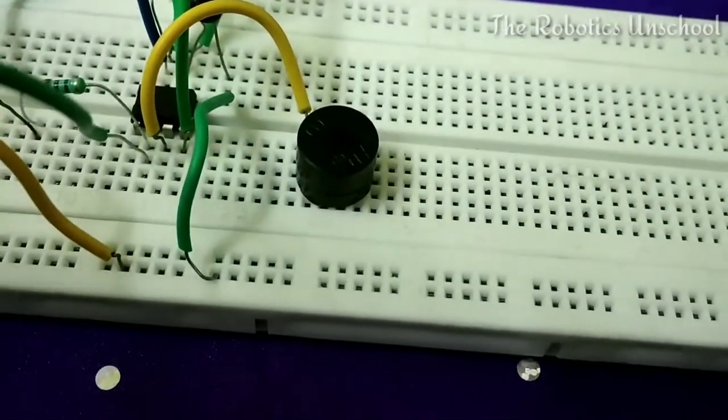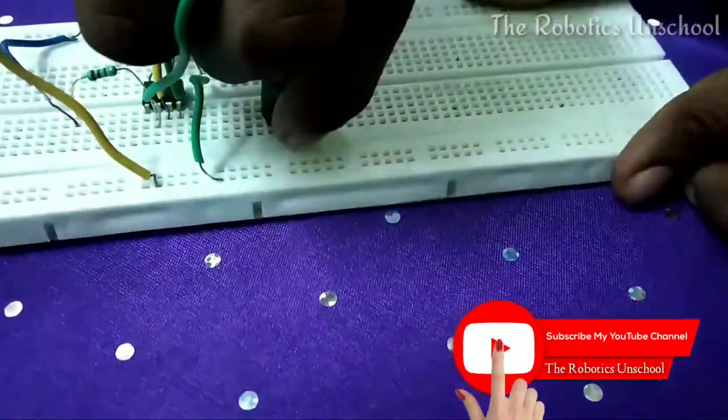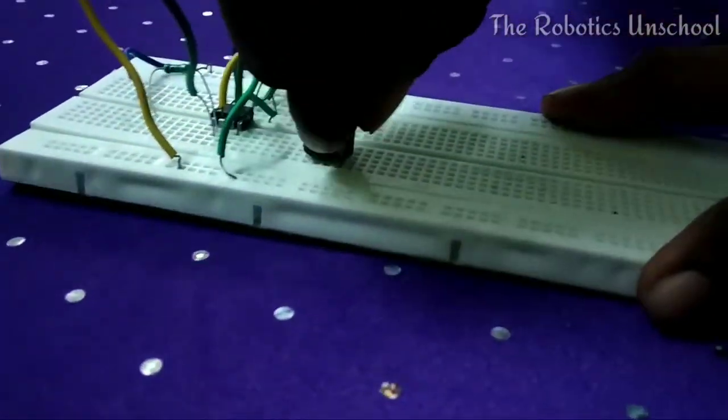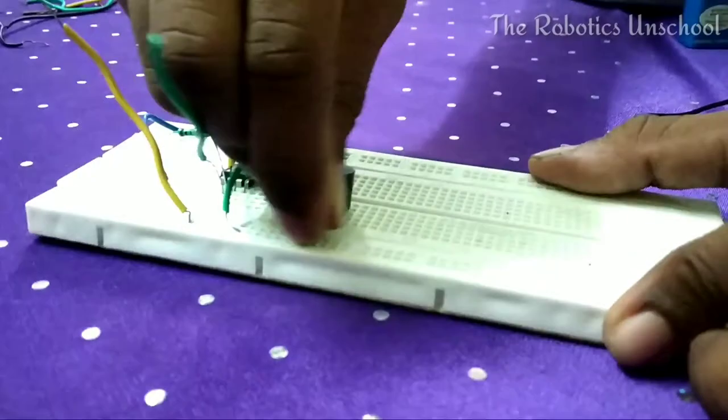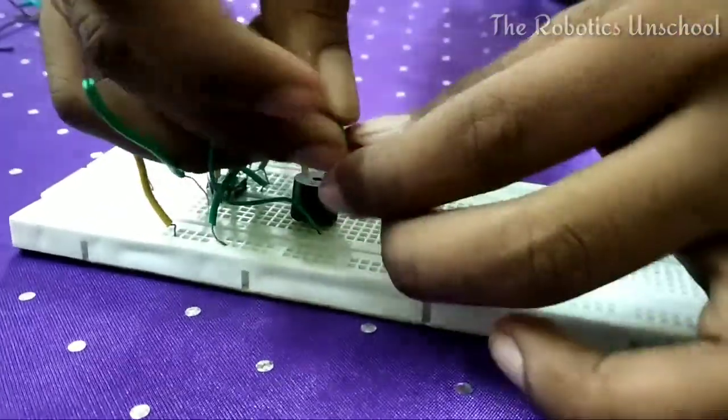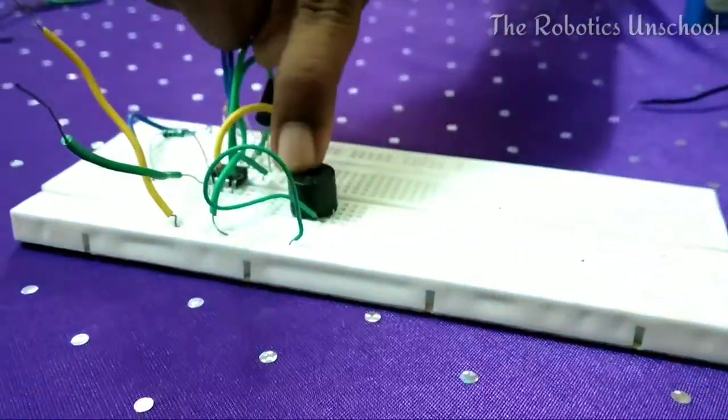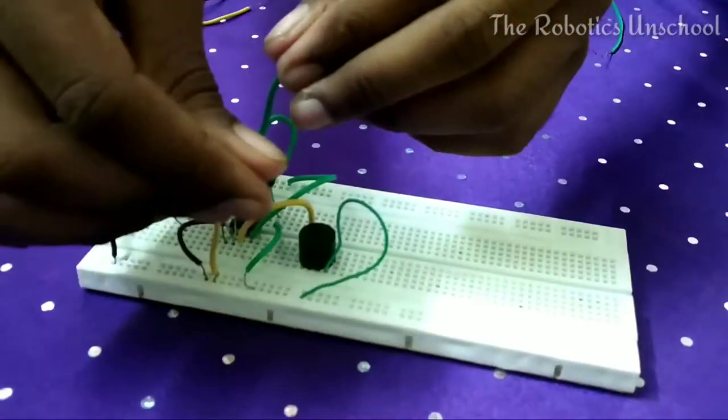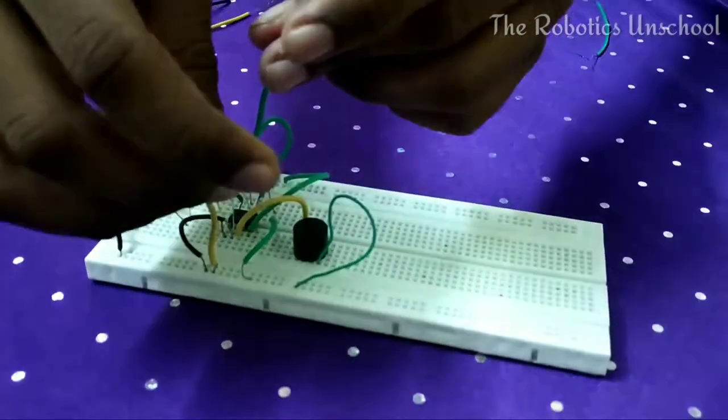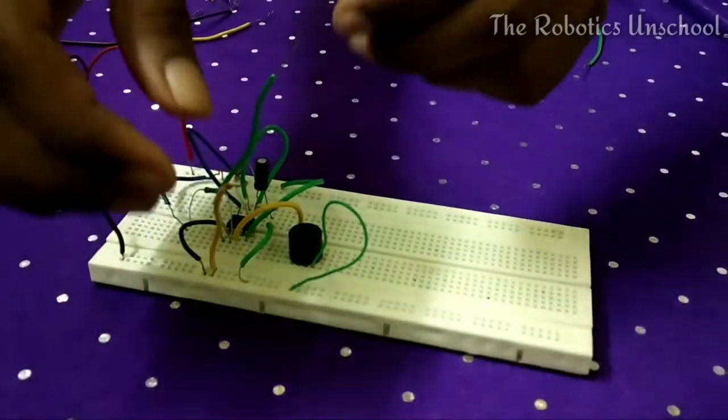From the negative, we have to connect the negative terminal to the negative of the breadboard. Let's see how it is working. Yeah, it is working! From these two wires, we have to connect throughout the compound or gate.